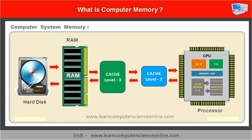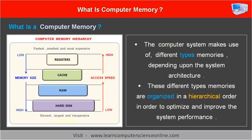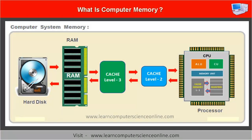The computer system makes use of different types of memories depending upon the system architecture. These different types of memories are organized in a hierarchical order in order to optimize and improve the system performance. The different types of memories used in a computer system include the following.